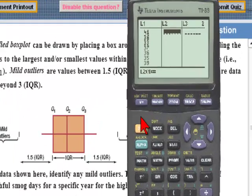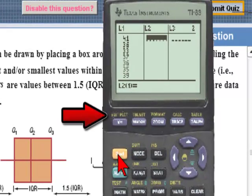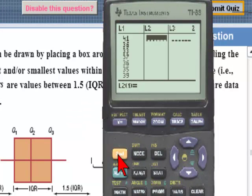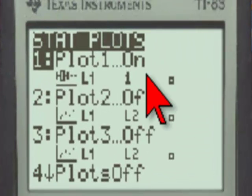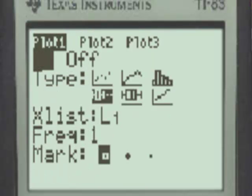We're now going to go to the stat plot button, which is in yellow above the y equal to button. So we'll hit the yellow function key and then the y equal to button. We see that plot number 1 under stat plots is turned on. We can go to plot number 1 by hitting the enter key.